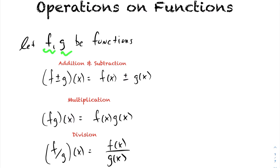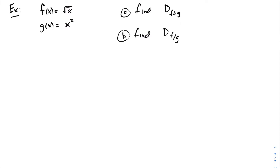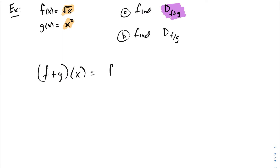Let's take a look at some examples. For the first example, we have f(x) = √x and g(x) = x². First, we want to find the domain of f plus g. The function f plus g acting on x is, by definition, f(x) plus g(x), which is √x plus x².